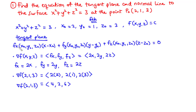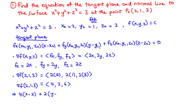Next, using the generalized tangent plane equation, we find the tangent plane. From the gradient, Fx at x0, y0, z0 equals 4, Fy equals 2, and Fz equals 6. So we have: 4 times (x minus 2), plus 2 times (y minus 1), plus 6 times (z minus 3) equals 0. Now, 2 is common to each term, so we can divide through by 2.